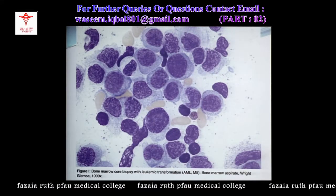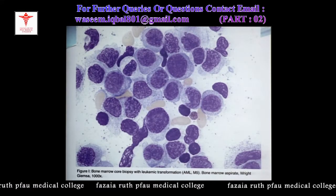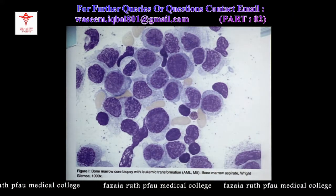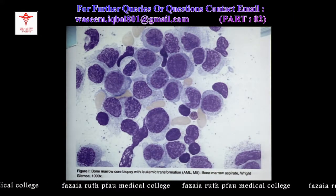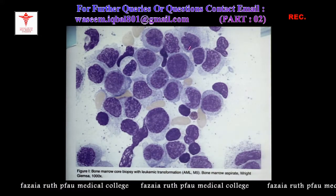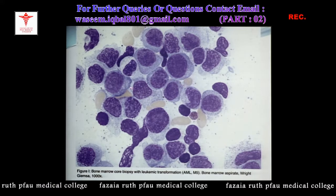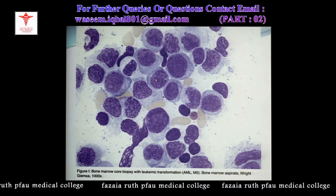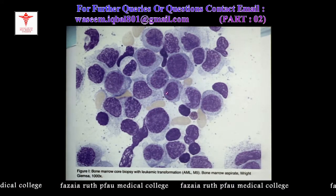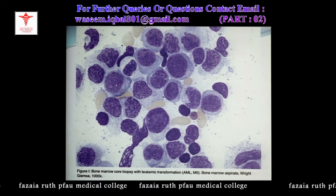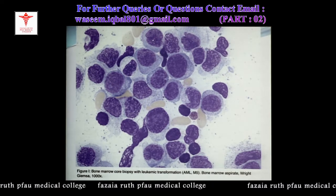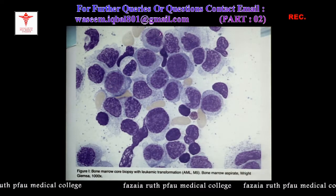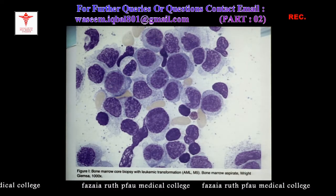This is a slide of acute leukemia — acute myeloid leukemia. There are blast cells, which are immature, primitive cells. The DNA is primitive and some nuclei are visible in them.